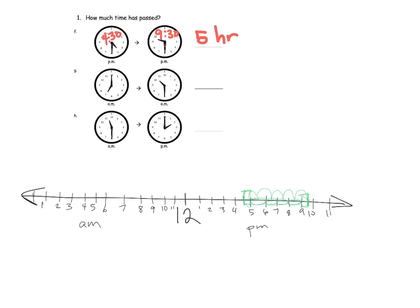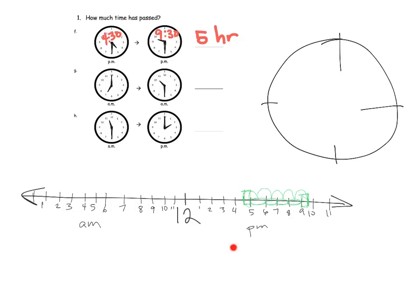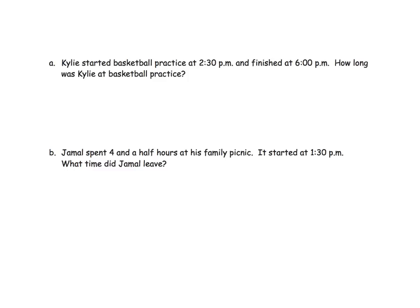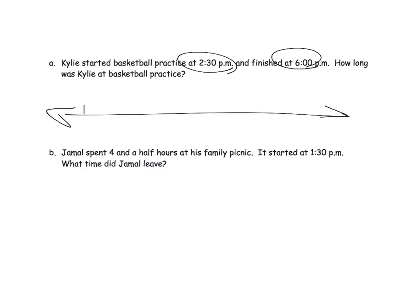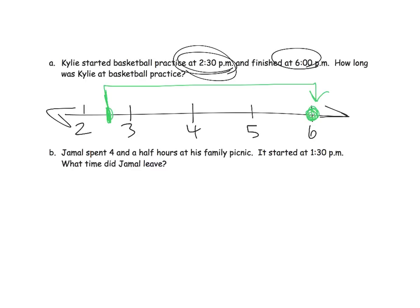Parents and teachers, let your students choose whether they want to use the analog clock or the number line idea — they get to choose. Here it says Kylie started basketball practice at 2:30 and finished at 6, both p.m. How long did the practice last? So 2:30 is right in the middle of 2 and 3. Here's 6 o'clock. How far did we go from 2:30 all the way to 6? We've got a full hour, a full hour, a full hour, and a half an hour — so that's three and a half hours.